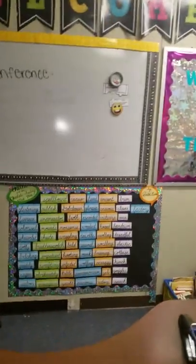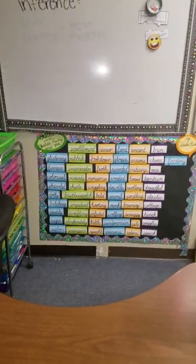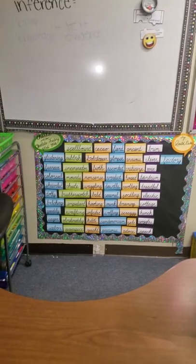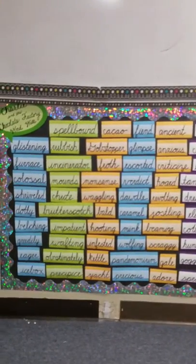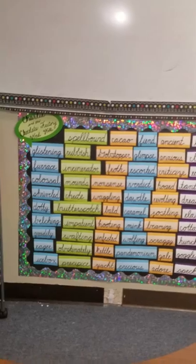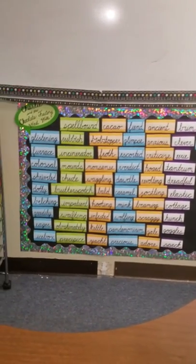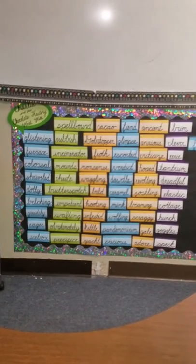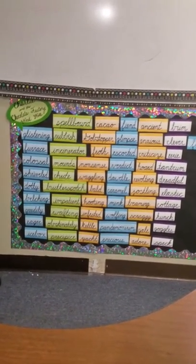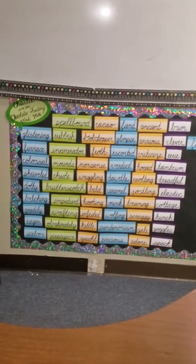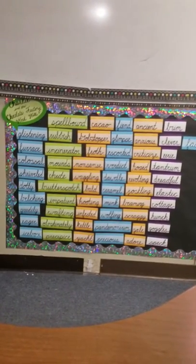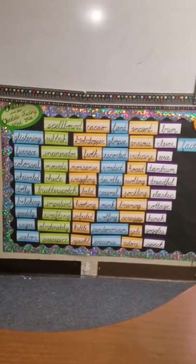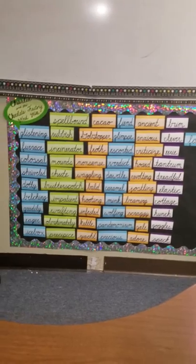Another thing we did: we are reading Charlie and the Chocolate Factory for my fourth and fifth grade, and I put their vocabulary words up like a word wall so they can see it and have a visual. I put it behind our guided reading section. Again, these are just dollar strips from a pack from Dollar Tree.